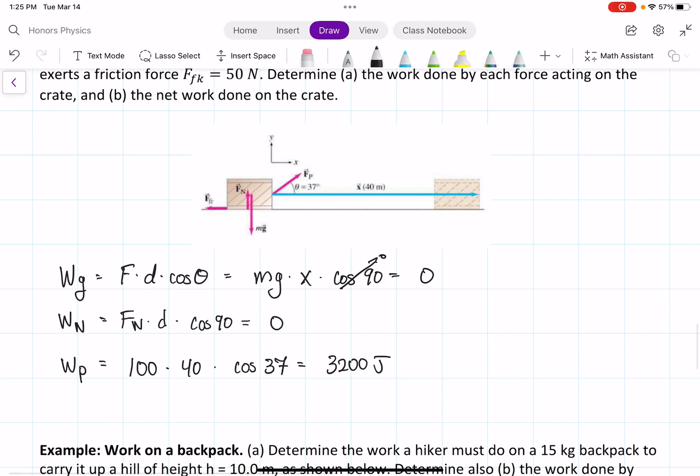If we then look for friction, we have 50 times 40 times cosine of 180, because that's the angle. So we get negative 2,000 joules.